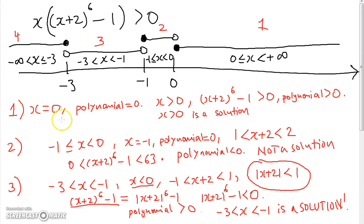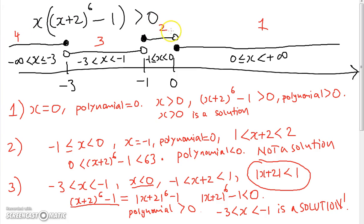For piece 4 (x ≤ -3): when x = -3 the polynomial is 0, not greater than 0. For x < -3, x is negative but (x + 2)^6 minus 1 is always positive, so the polynomial is negative — no solution. The second strip also yields no solution. So the solutions are x > 0 and -3 < x < -1.